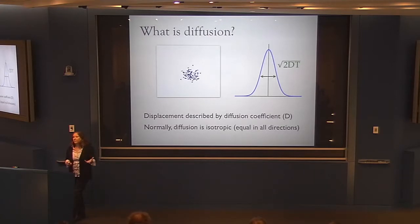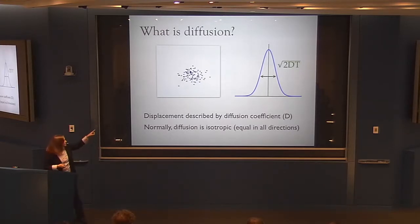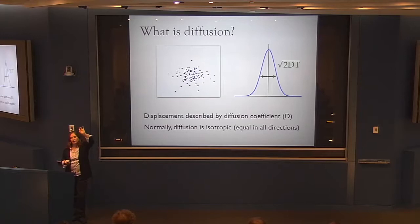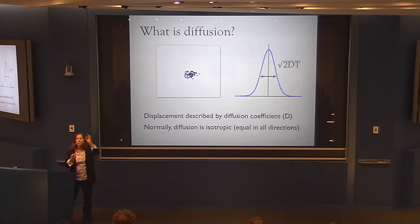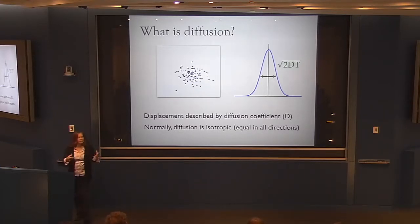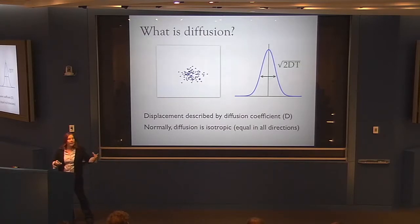Diffusion is this displacement of water molecules. In MRI, we're always looking at water molecules — they're a fantastic probe of the tissue environment they find themselves in. If you imagine tagging a bunch of water molecules instantaneously and watching where they displace to over time, you would see something similar to that droplet of ink redistributing over space.